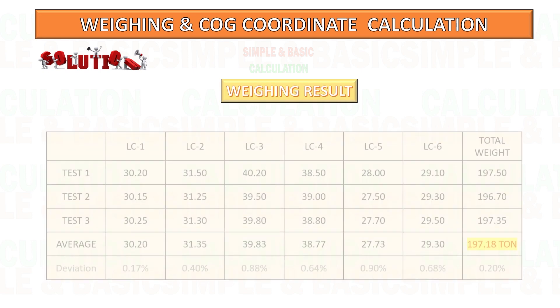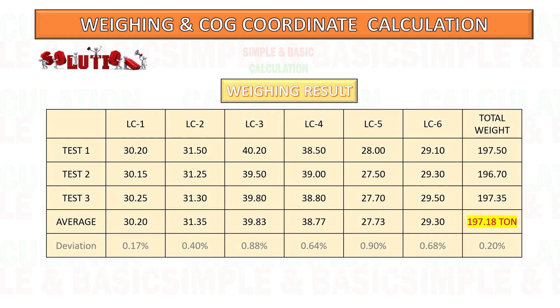After getting all reports, start to calculate the average weight in each load cell by adding the three data for load test one, two, and three, and divide it by three to get the average value.